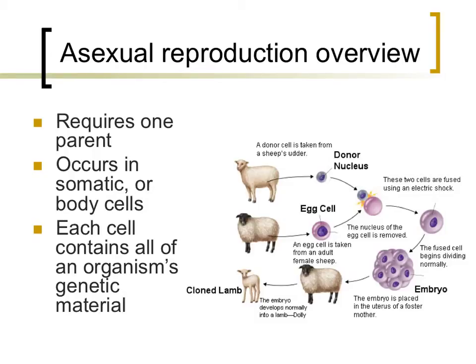When entire organisms are cloned, as the image to the right suggests, somatic cells are used instead of gametes. The first cloned sheep, Dolly, didn't require two parents, but just one cell. Dolly was genetically identical to her only parent, her mother.